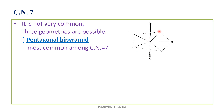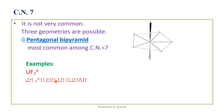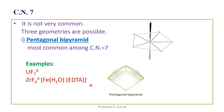In the pentagonal bipyramidal structure, five ligands are in one plane forming a pentagon, with one ligand above and one below. Its examples are [UF7]³⁻, [ZrF7]³⁻, and [Fe(H₂O)(EDTA)]⁻.